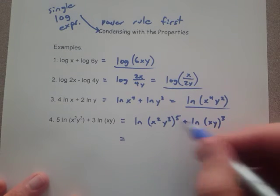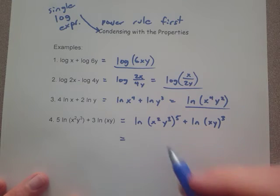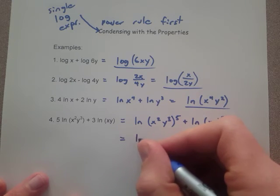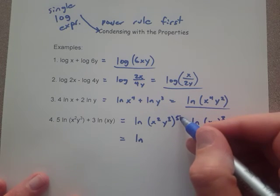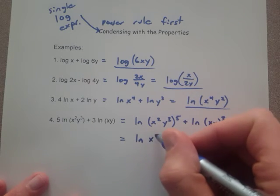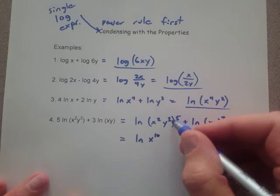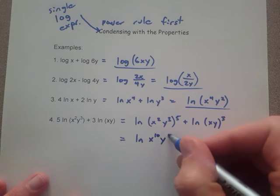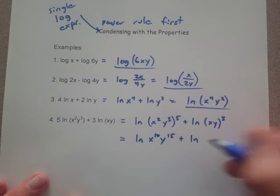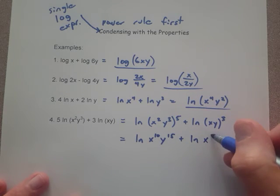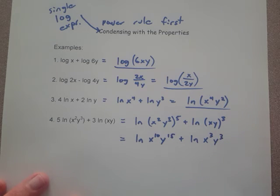When we have the power of a power, remember that we distribute in and we're going to be multiplying. So this means that we will be giving us x squared to the 5th, so that's 2 times 5, so x to the 10th, then it'll be 3 times 5 here, y to the 15th. Next, ln, this one's pretty simple, it's just you distribute the 3, so x to the 3rd, y to the 3rd.